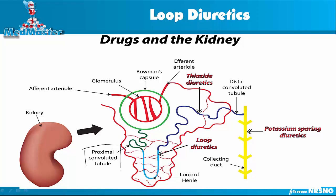First, the proximal convoluted tubule, where about 65 to 70 percent of sodium gets reabsorbed. There is no diuretic that works here, so 65 to 70 percent of sodium is going to get reabsorbed no matter what diuretic we give. The next part is the descending loop of Henle, the loop of Henle, and the ascending loop of Henle.